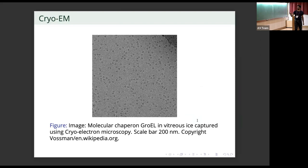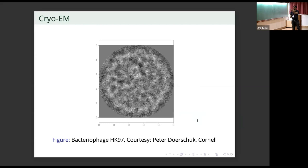Here is an example of such a picture — you see lots of macromolecules in different orientations, and from all of these pictures one has to reconstruct the three dimensional structure of the macromolecules; that is the challenge. Here is one particular virus, a bacteriophage that attacks bacteria, called HK97. This is a 200 by 200 pixel image, and as you can see it's quite noisy.